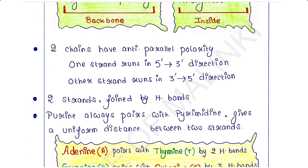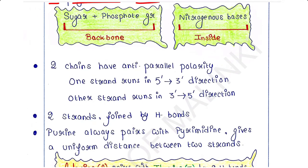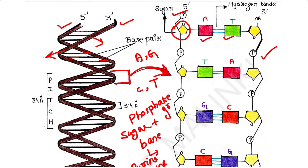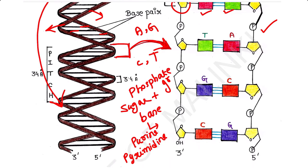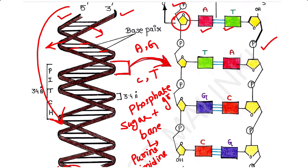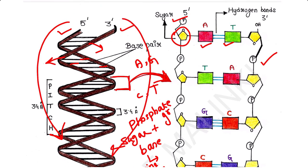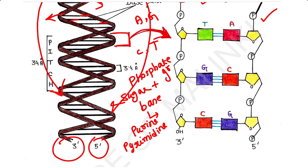The two polynucleotide chains have anti-parallel polarity. One strand runs in the five prime to three prime direction, whereas the other strand runs in the three prime to five prime direction, as we can see in this diagram.